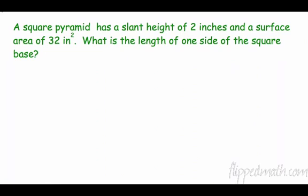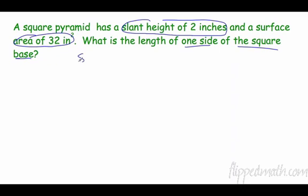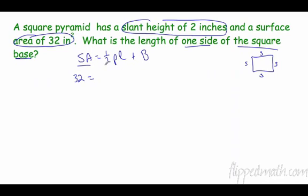A square pyramid has a slant height of 2 inches and a surface area of 32 inches squared. What is the length of one side of the square base? Using the surface area formula: one-half times perimeter times slant height plus area of base. The perimeter of a square is 4s, so we get: 32 = one-half(4s)(2) + s².